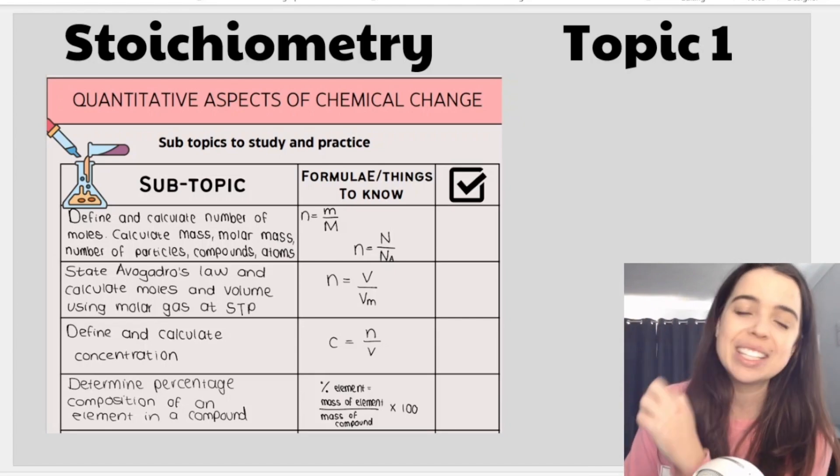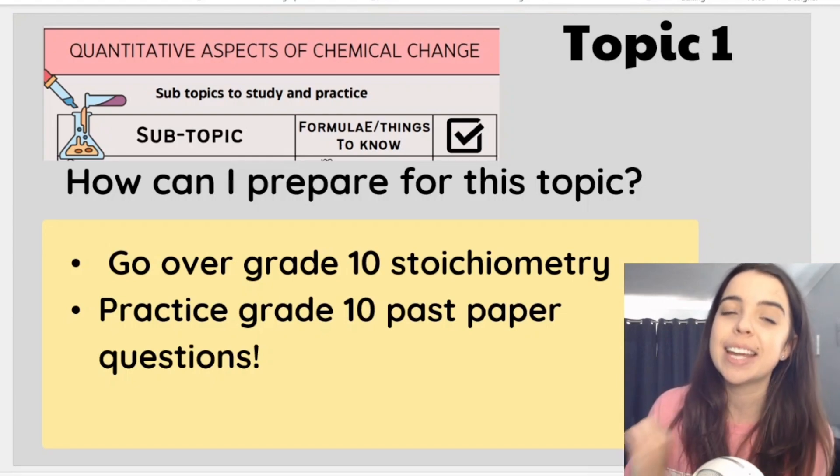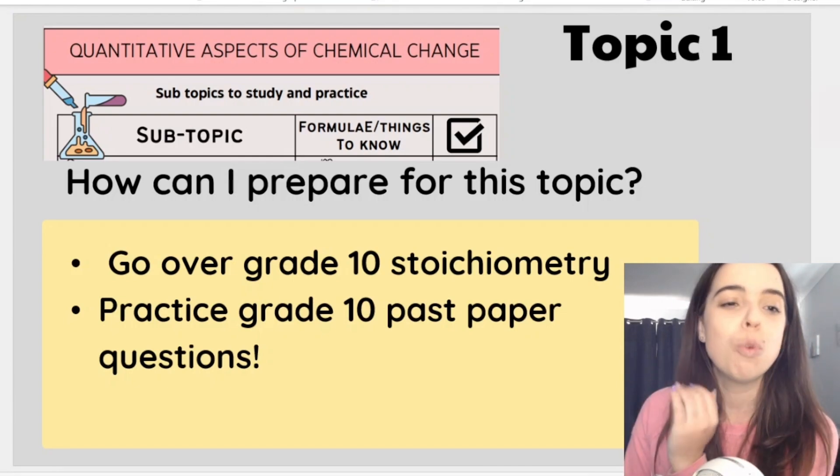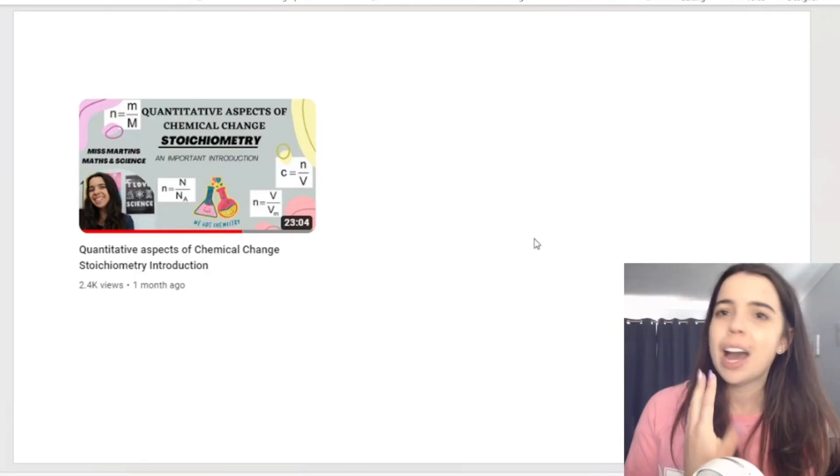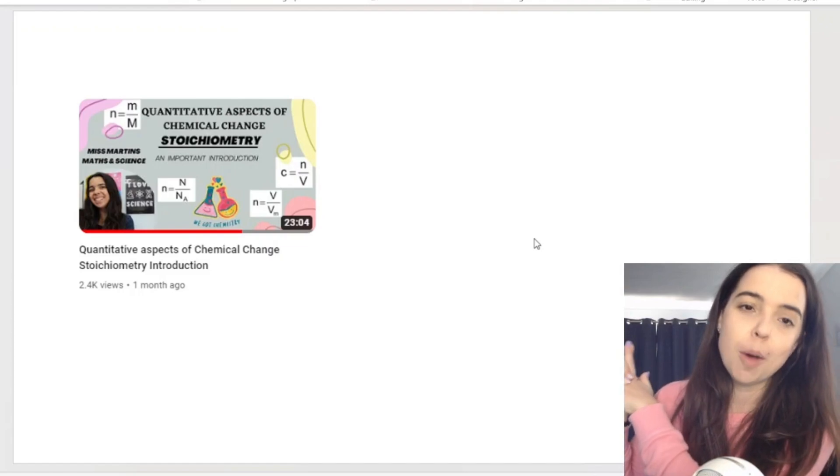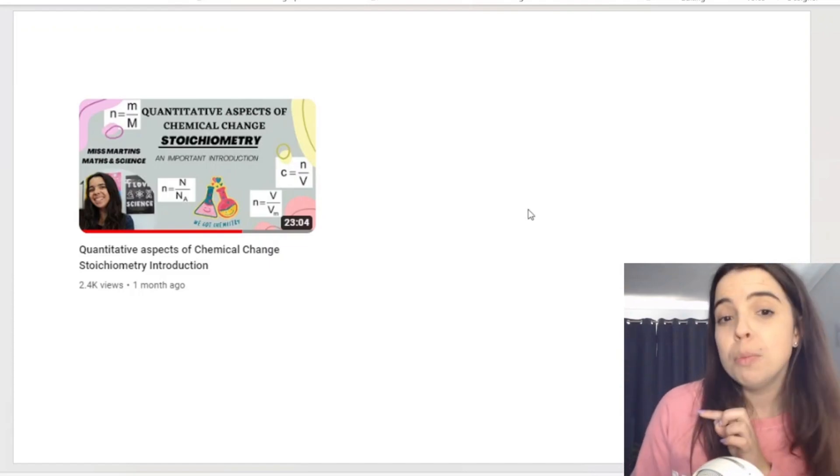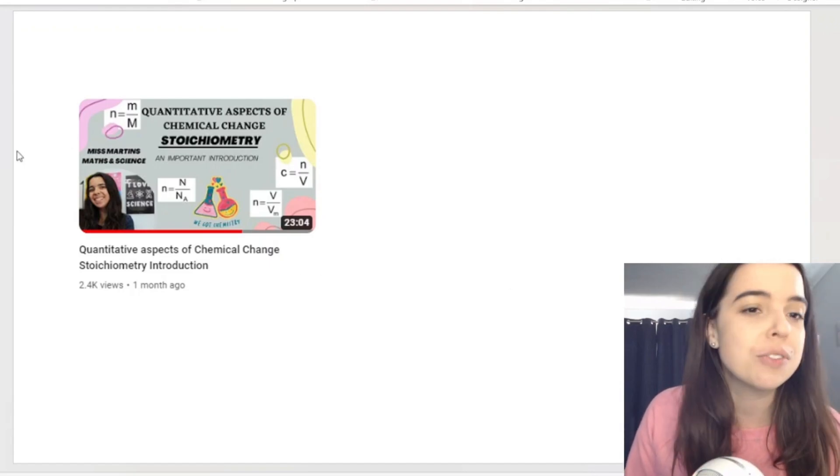To prepare for this topic you need to go over your grade 10 stoichiometry, practice grade 10 past papers for stoichiometry. If you've completely forgotten stoichiometry, how to do it, you can watch my introduction to stoichiometry video where I basically go over the four formulas that you see on the screen and I go through examples of how to use each of these formulas. This is a good video to watch to kind of get you back into the stoichiometry mindset.